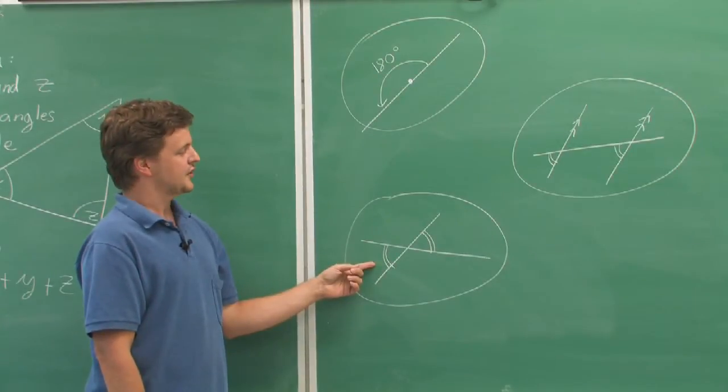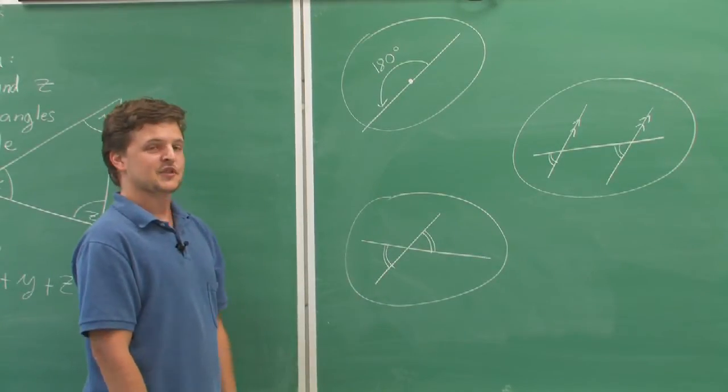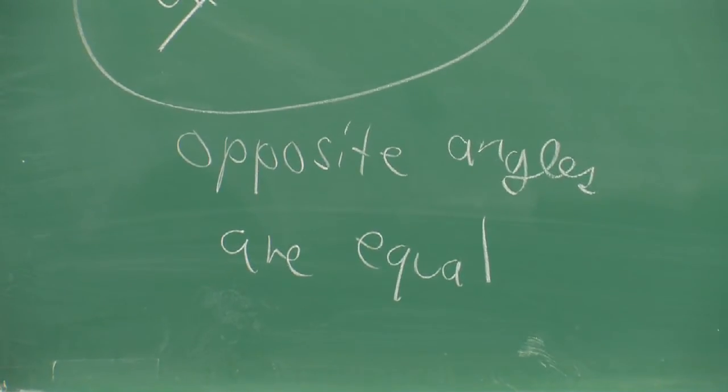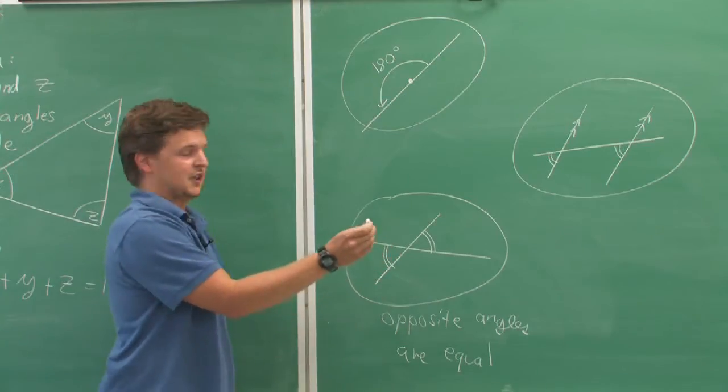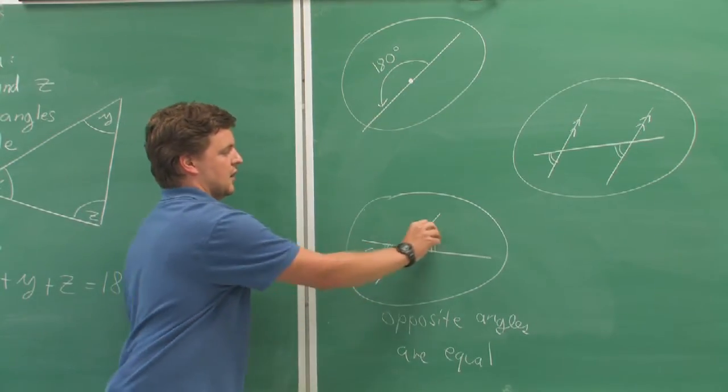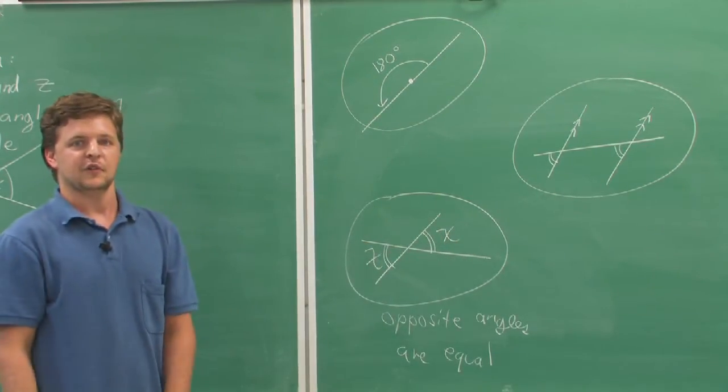If two lines cross, then the opposite angles are equal. In fact, we could use the same letter to denote both of those angles.